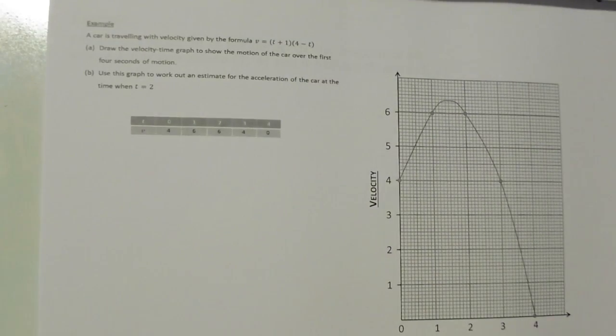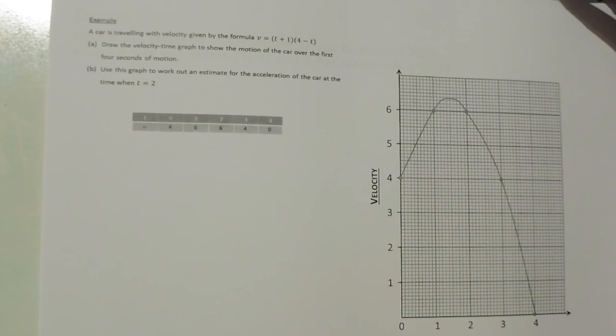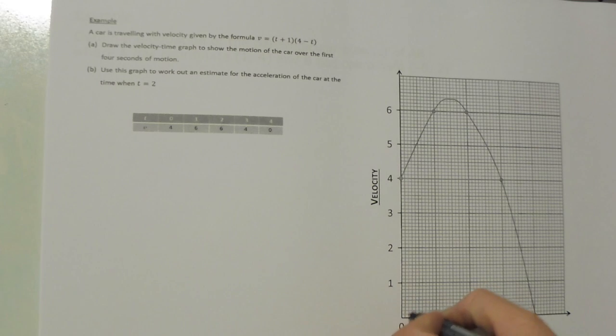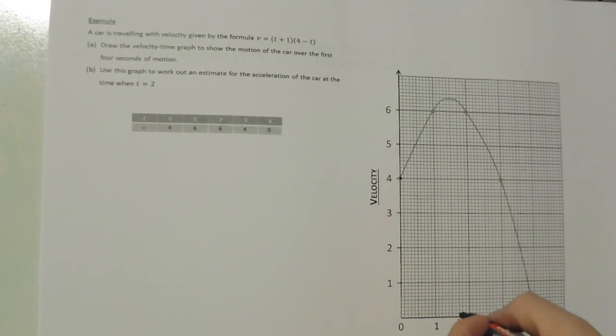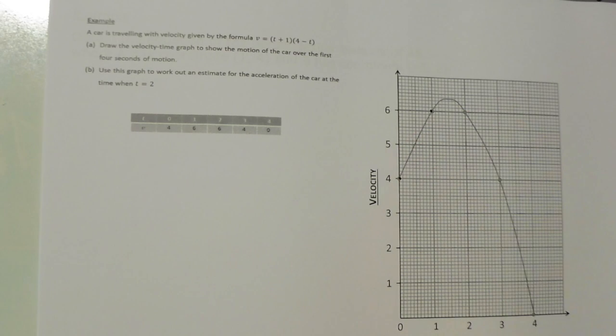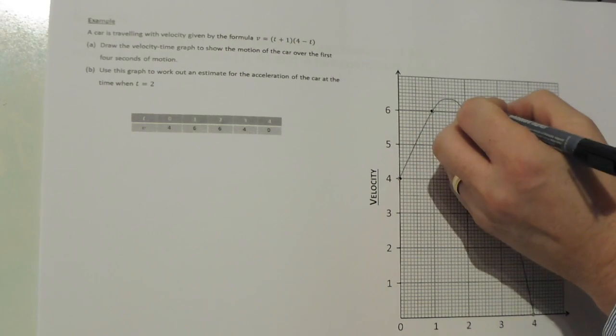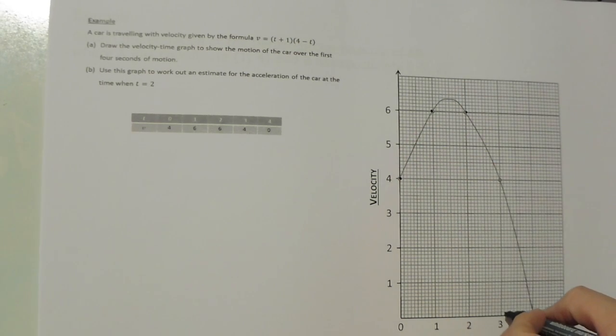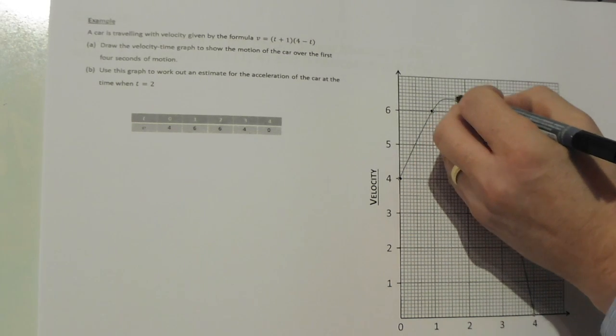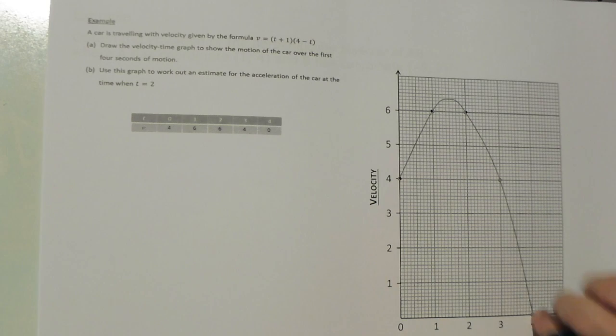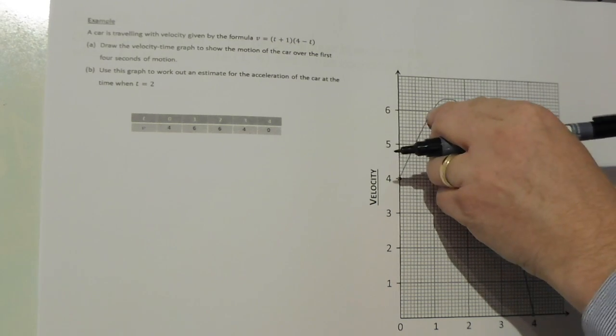From that, we can draw the graph. At t=0 we're at 4, at t=1 we're at 6, at t=2 we're at 6, at t=3 we're at 4, and at t=4 we're at 0. We draw a smooth curve through those points, making sure to curve it properly around the peak from 6 to 6.